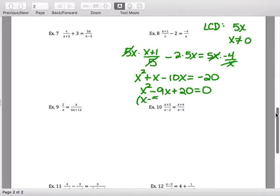So I do these rather quickly because there's an assumption you know how to do this. So I'm getting X is 5, X is 4. Check it against my restrictions. Circle your final answers.